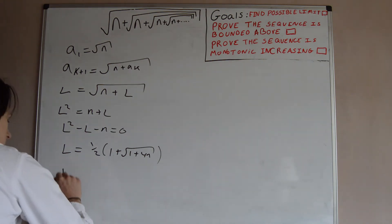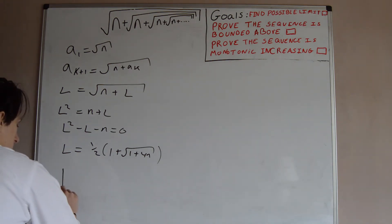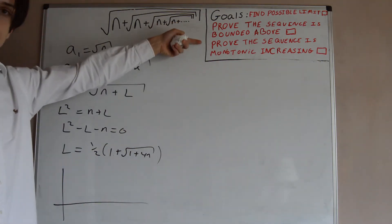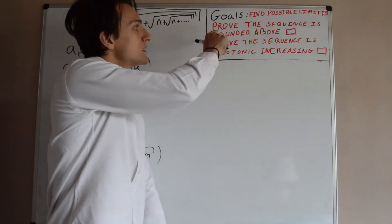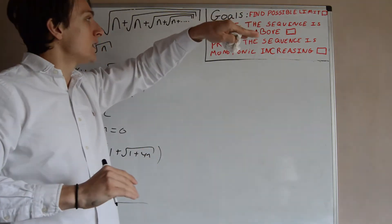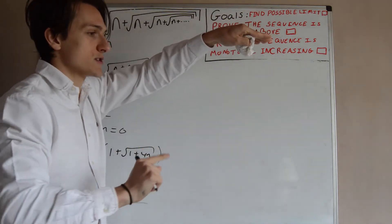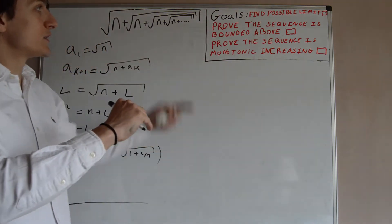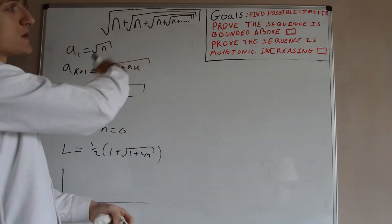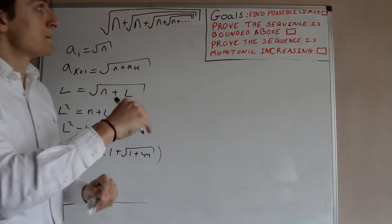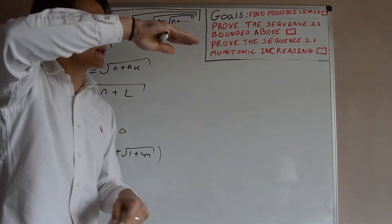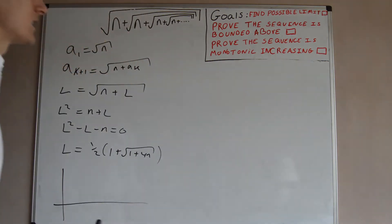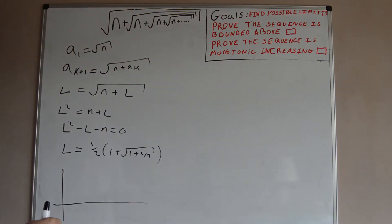How do we prove this is the real limit? We need to do two things: prove the sequence is bounded above, and prove it is monotonically increasing. Alternatively for a different sequence you could show bounded below and decreasing — it would also converge. This is the theorem of convergence: if a monotonically increasing sequence is bounded above, it converges.